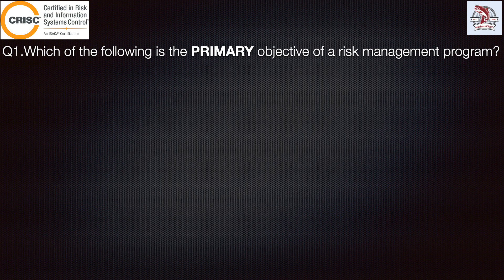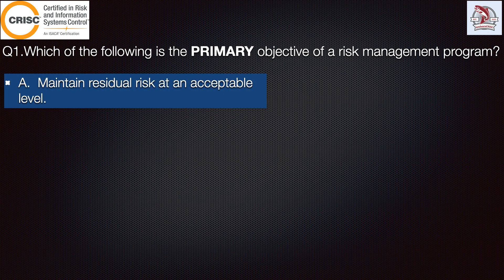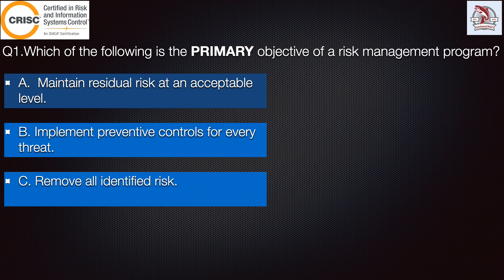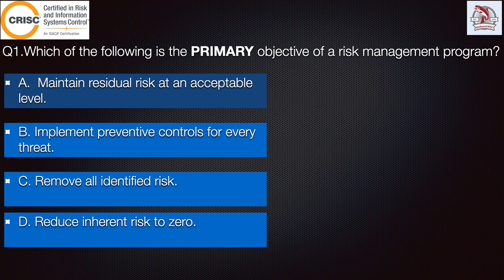Let's start with question number one. Which of the following is the primary objective of a risk management program? Option A: maintain residual risk at an acceptable level. Option B: implement preventive controls for every threat. Option C: remove all identified risk. Option D: reduce inherent risk to zero.